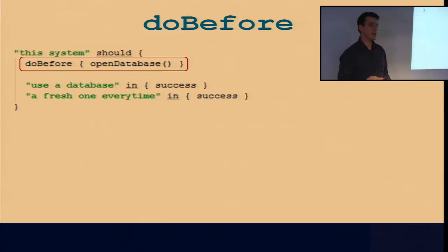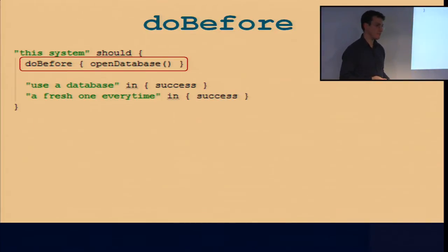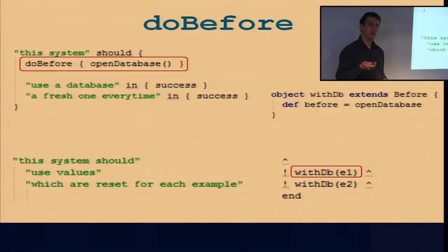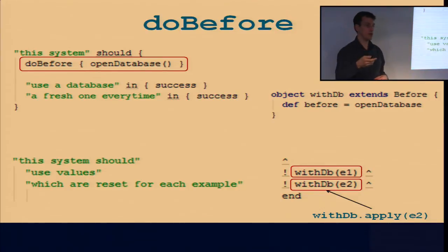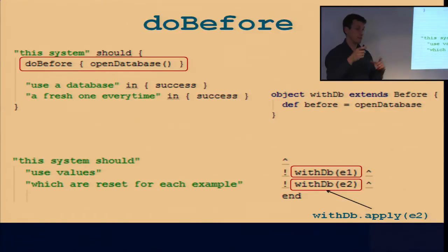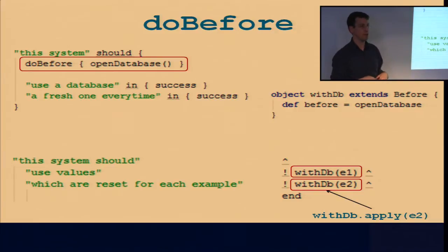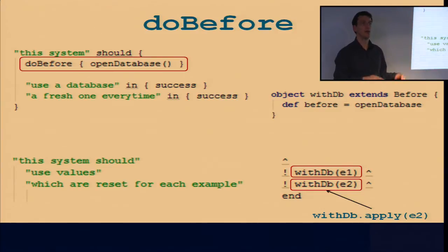I did similar things for things like a 'do before' method — used in Specs to set up database state before executing anything. This can be done using objects with an apply method. There's a nice syntax trick in Scala: I can say 'withdb e2,' which actually calls an apply method on the 'withdb' object. The apply method is provided by the 'before' trait, which makes sure the before method is called first. If the setup has an exception, nothing more is executed; if it's OK, I execute my example.